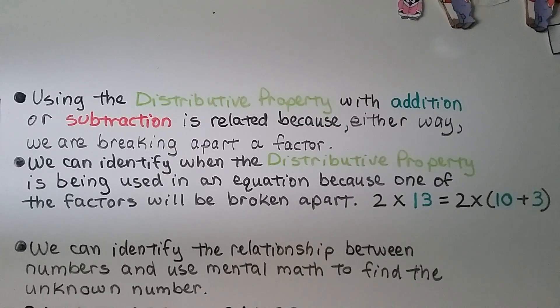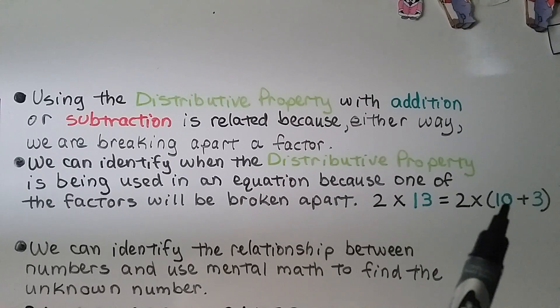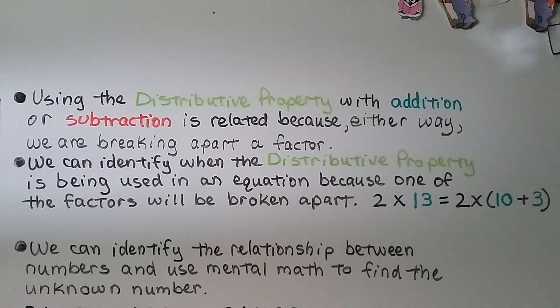Using the distributive property with addition or subtraction is related because either way we are breaking apart a factor. We can identify when the distributive property is being used in an equation because one of the factors will be broken apart. We know this is distributive property because the 13 was broken into a 10 plus a 3. And we can identify the relationship between numbers and use mental math to find the unknown number.